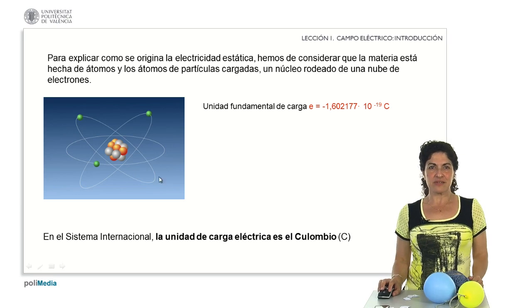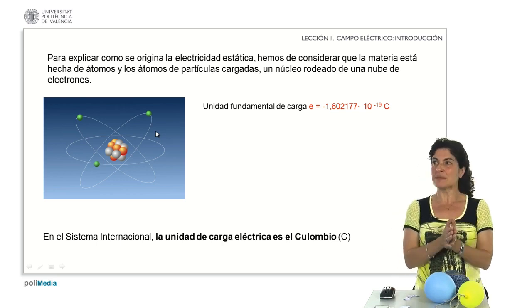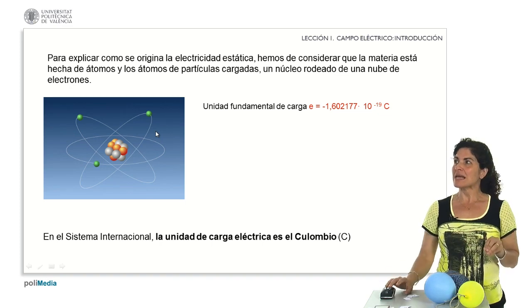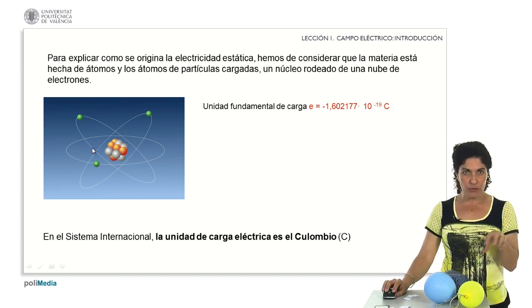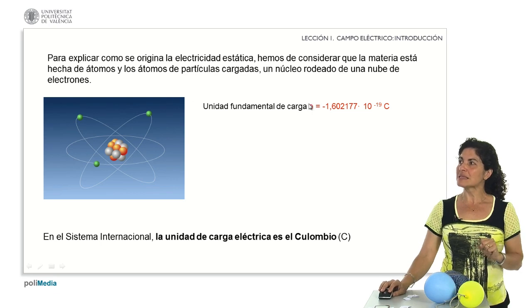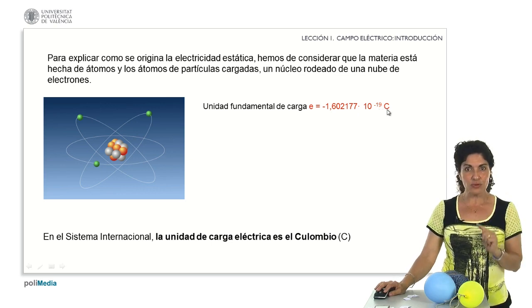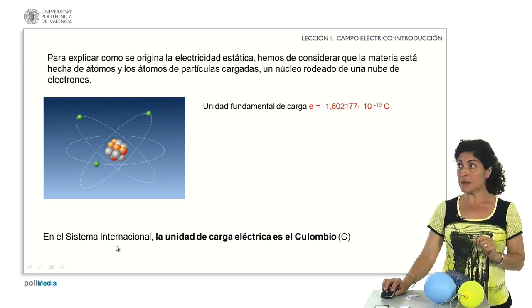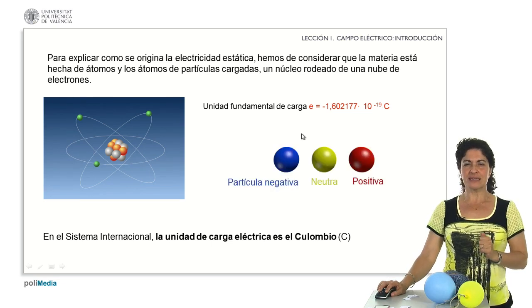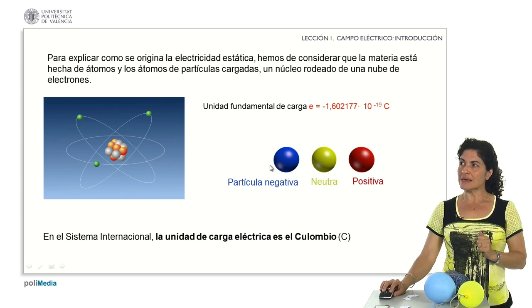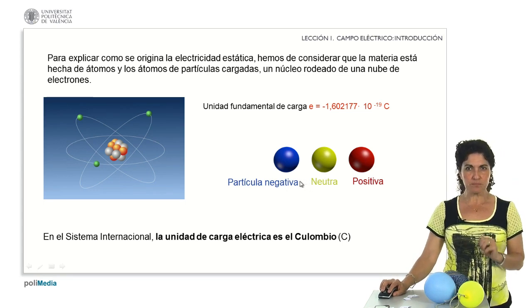The origin of electromagnetic interactions are the charges. To explain how they are produced, we must understand how matter is formed. Matter is formed by atoms. In their nuclei we have the positively and neutrally charged particles — protons and neutrons — and around them a cloud of electrons orbiting those nuclei. The fundamental unit of charge is that of the electron: −1.602177 × 10⁻¹⁹ coulombs, the coulomb being the unit of electric charge in the international system. The convention we will follow uses blue for negative particles, yellow for neutral ones, and red for positive particles.